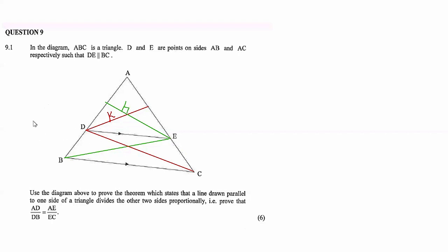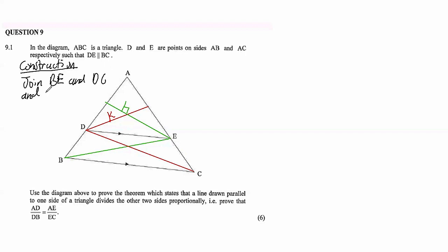You need to state what you did as part of the construction. So under Construction, write: join BE and DC, and draw perpendicular heights h and k.